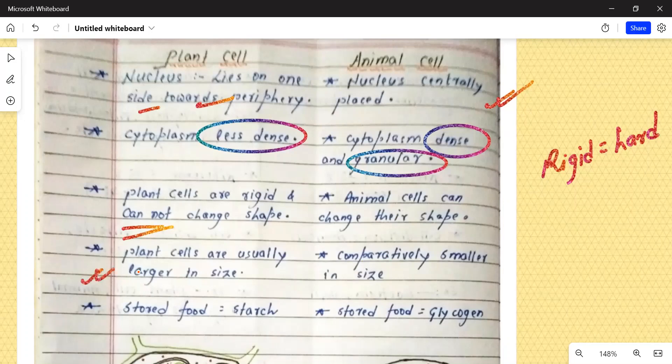Plant cells are usually larger in size, agar hum size ki comparison karte hai, to plant cell animal cells se bade hote hai and animal cells are comparatively smaller in size.